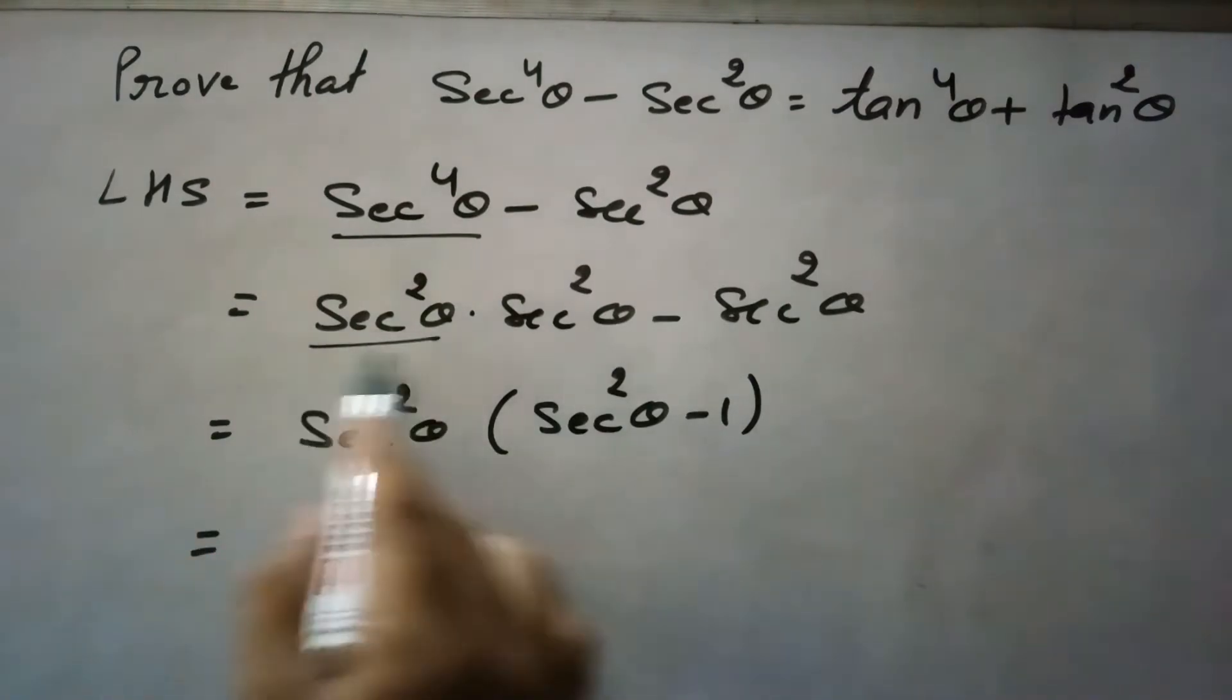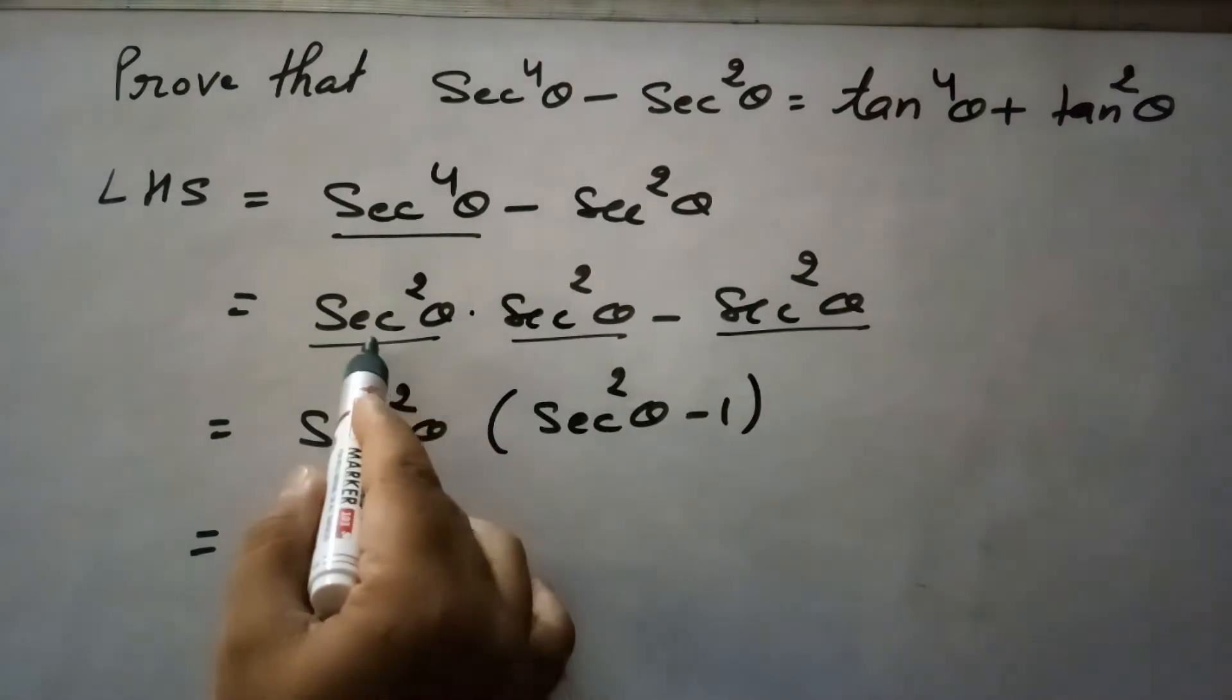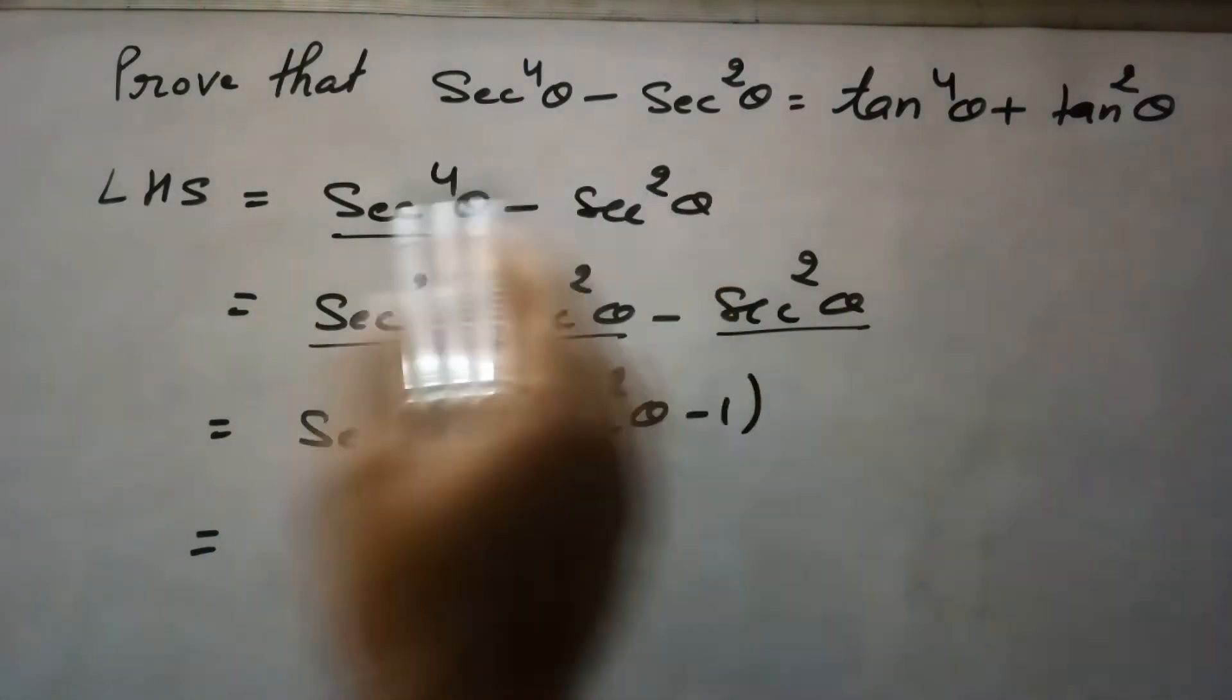So we will write here secant square theta and secant square theta, and here secant square theta as it is. We have split this into two because here it is square.